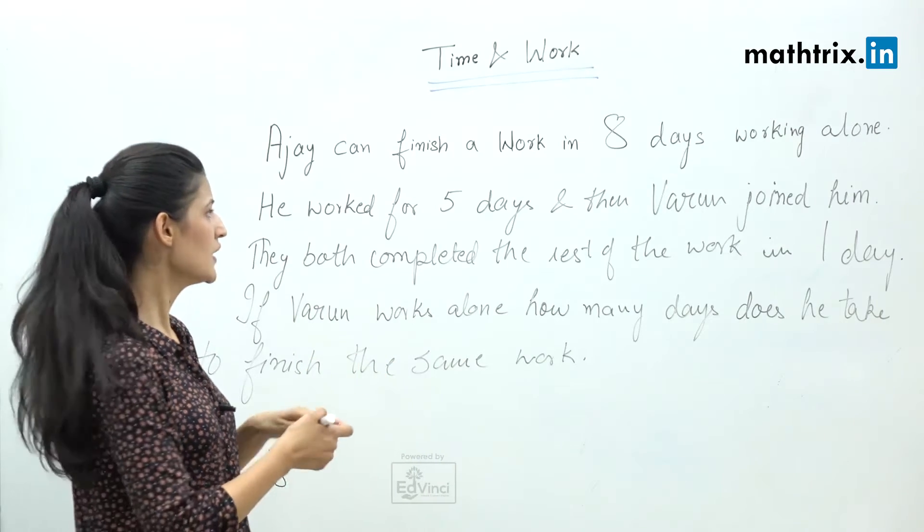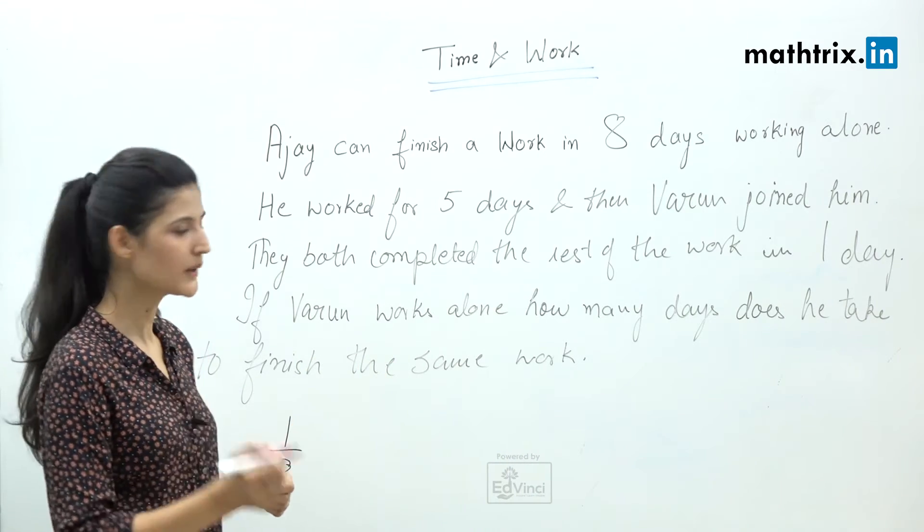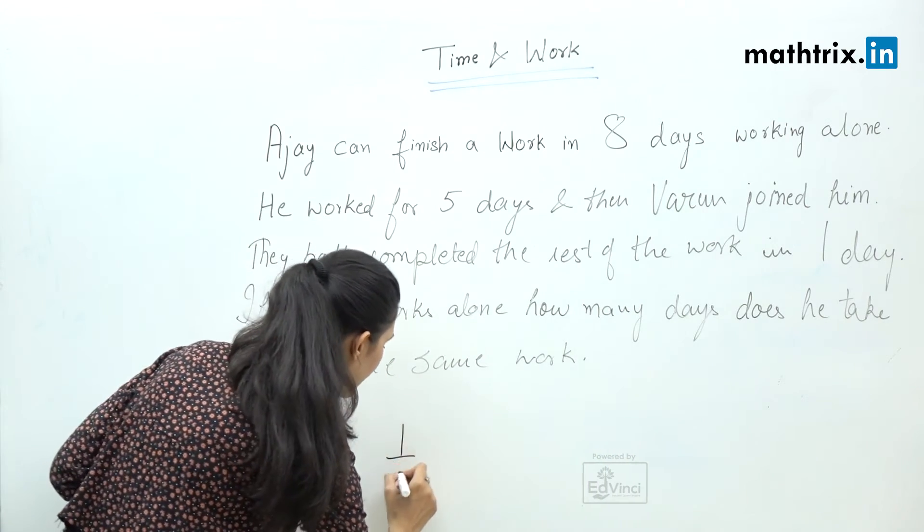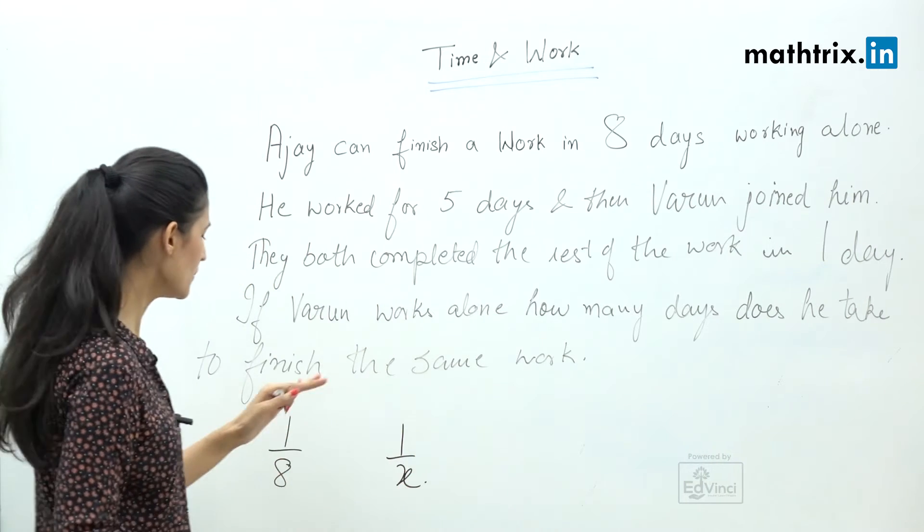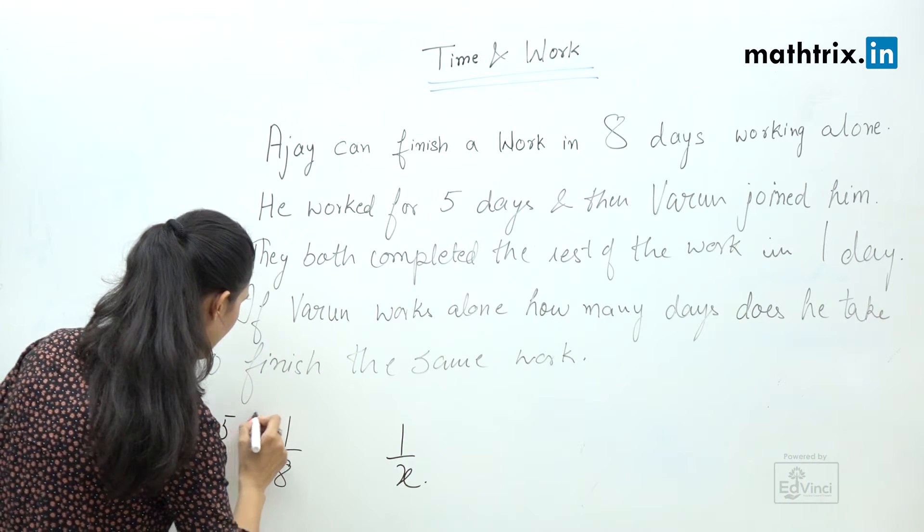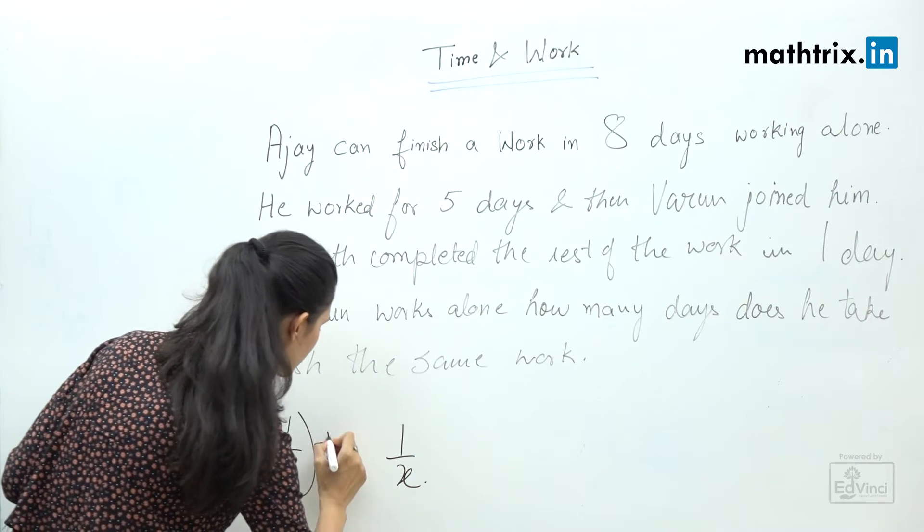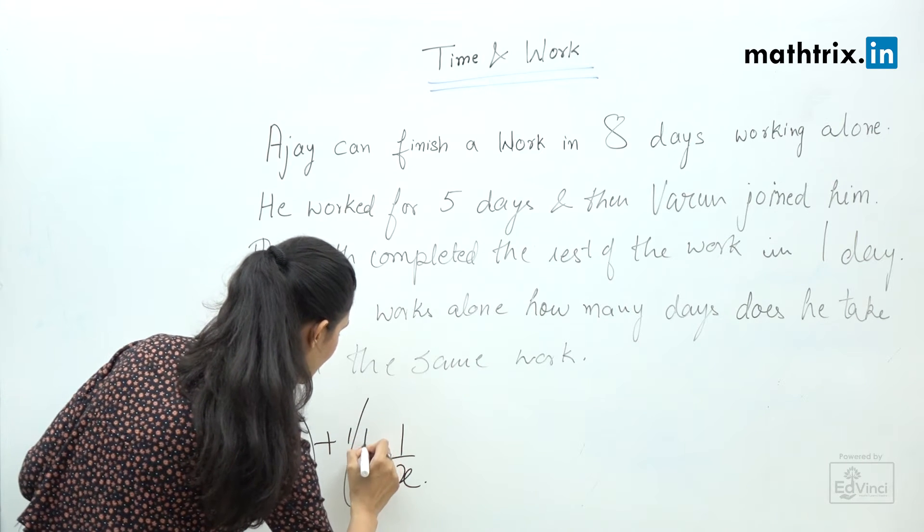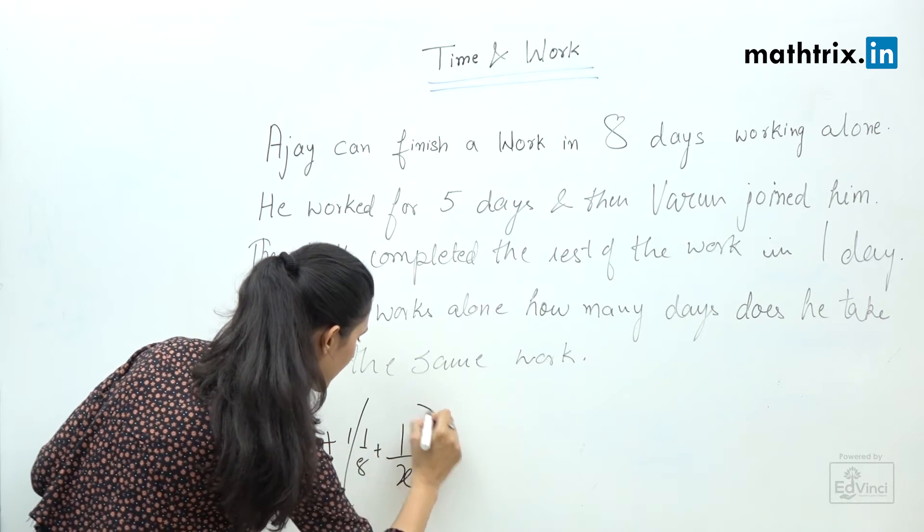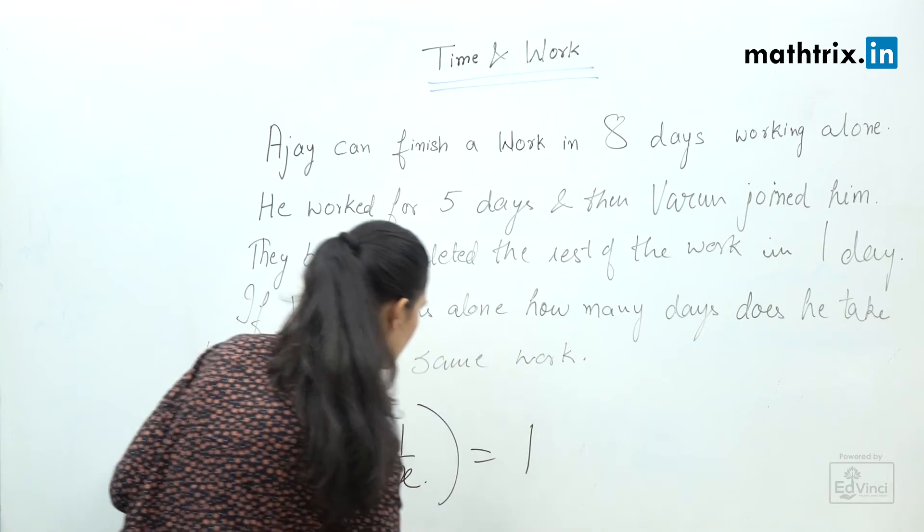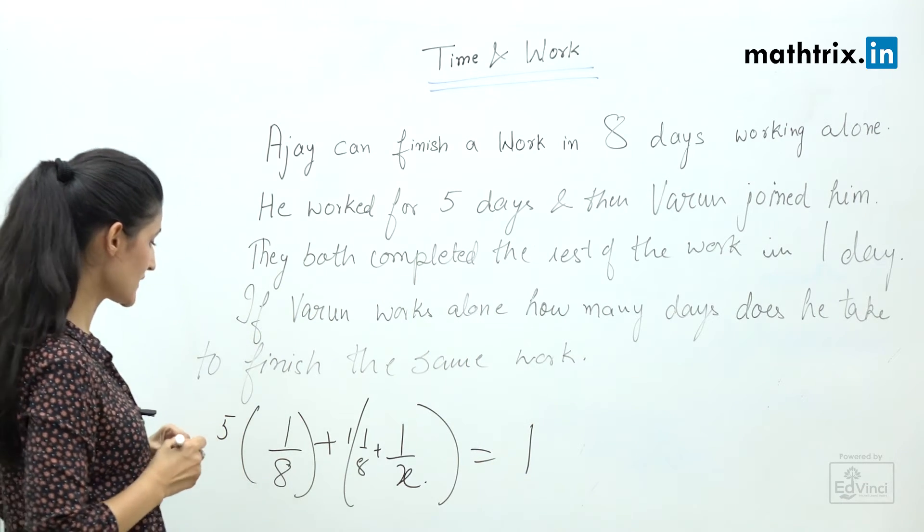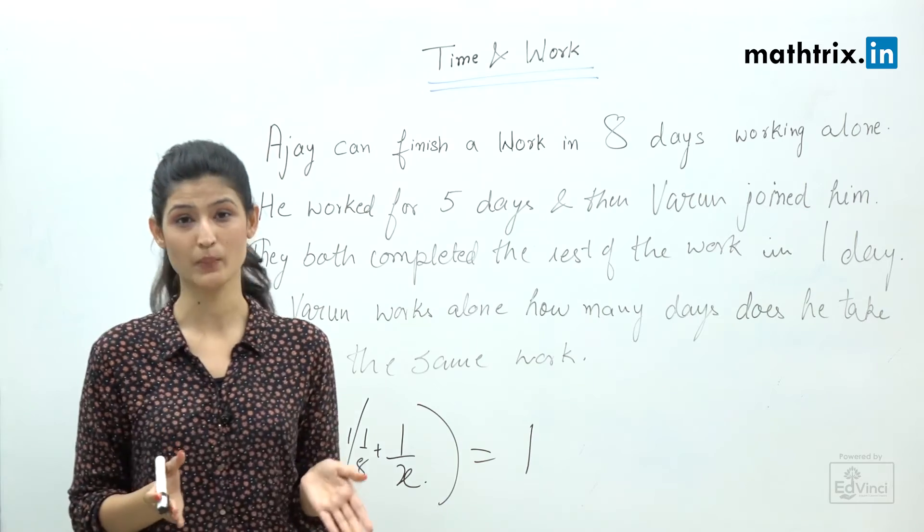The total work will be 5 × 1/8 + 1 × (1/8 + 1/x) = 1. This way we can solve the problem, but I have a simpler way of solving this question.